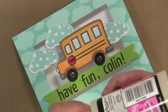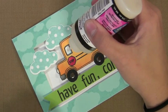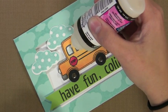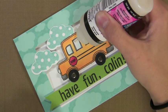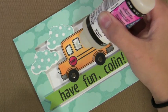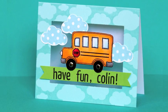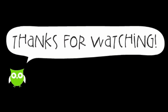Now to add a little shine to my bus windows, I just take my glossy accents, squirt a little bit out, and then I use the nozzle to kind of spread the glossy accents around. This dries pretty quickly and you have some nice shine on your windows. So I hope you enjoyed this fun little card. If you have any questions, please visit HeroArts.com. Thank you.